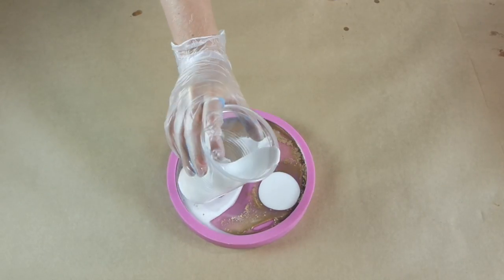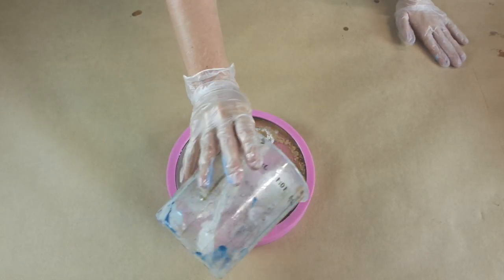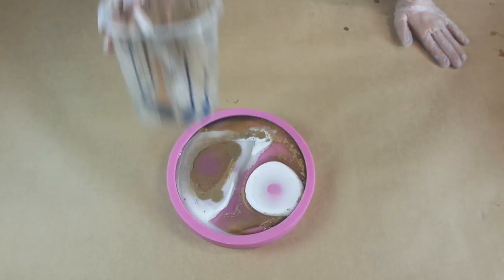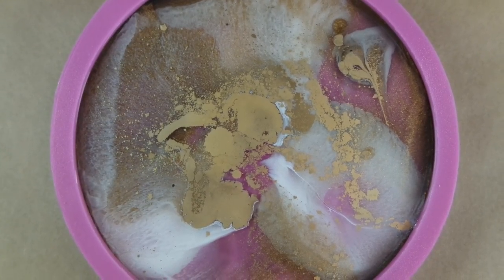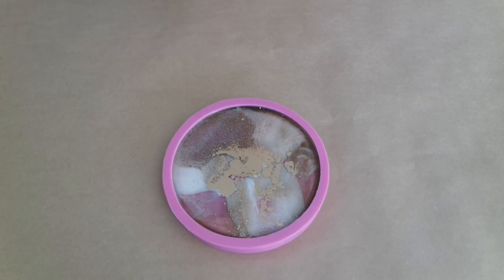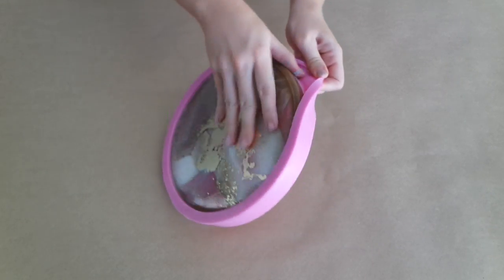When working with silicone molds and resin you want to make sure that you don't go the whole way to the top. You want to leave a little bit of a lip for the silicone mold, because otherwise it can be really hard getting your resin casting out if you didn't leave enough of a gap.